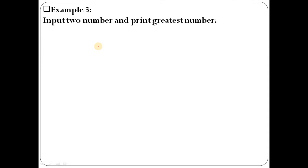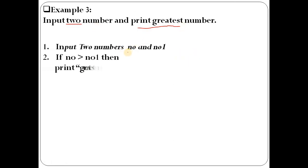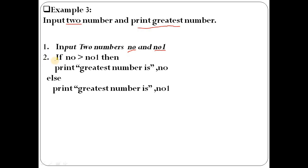Next example: input two numbers and print the greatest value. Here we input two numbers — two values — and then print which is the greatest. The process to write this algorithm: first, take two numbers from the user and store them in variables 'No' and 'No1'.